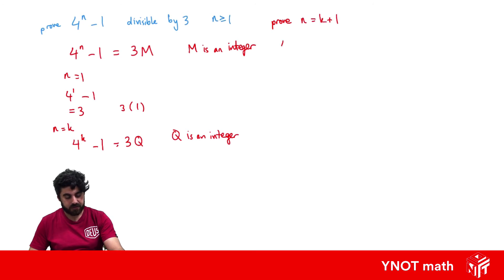So that's going to give us 4 to the k plus 1 minus 1. And this time, I'm not going to assign it equal to anything. So I think we're just going to see what we can do here.